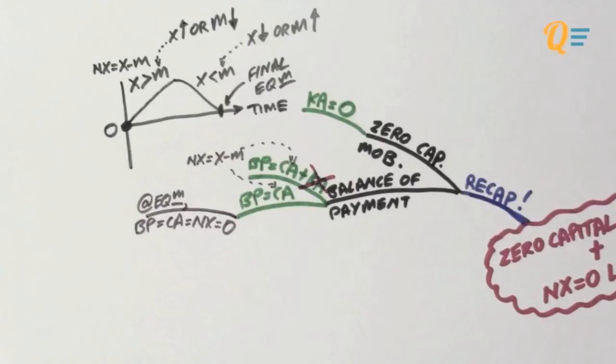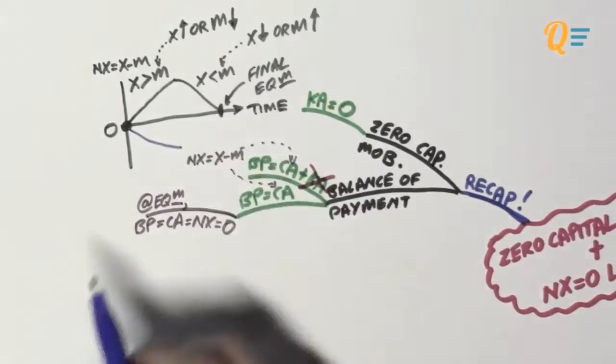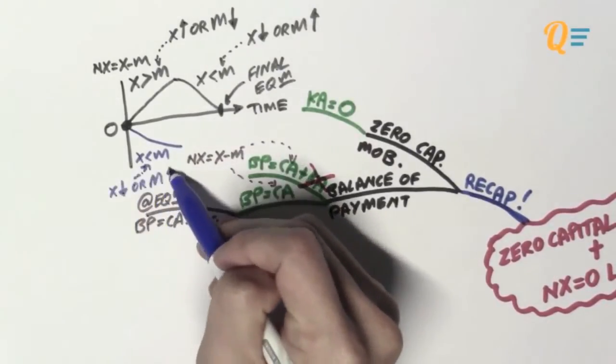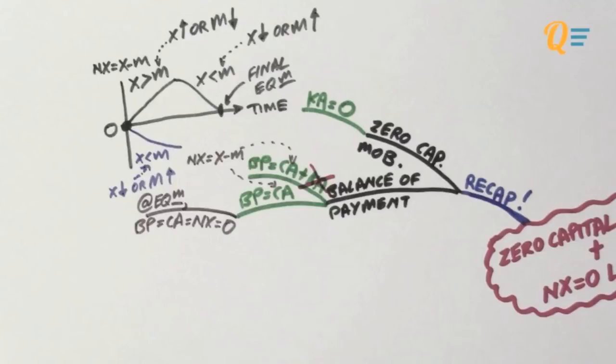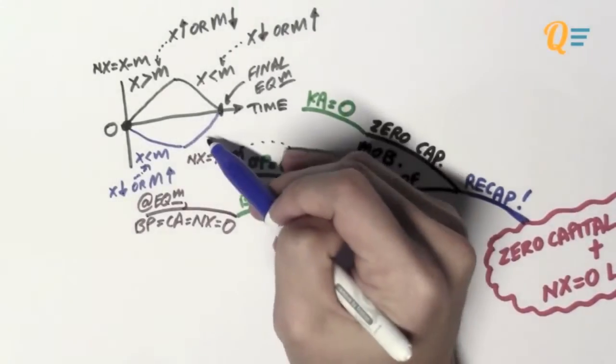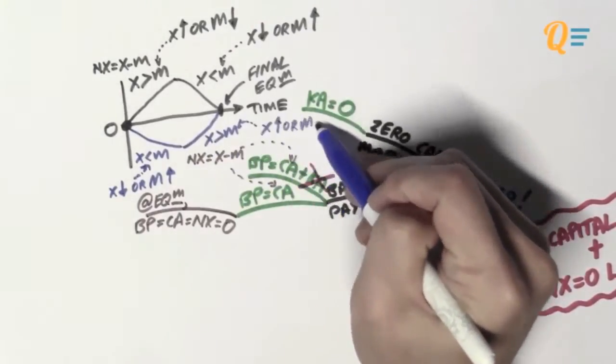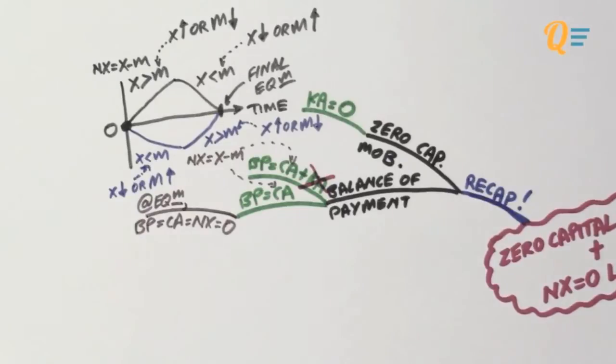At the same time, my net exports can also be in the negative region. So when we start from zero, we go into the negative region when our exports is less than our imports. And this is caused by either a decrease in exports or an increase in imports. So to get back to the final equilibrium of net exports equals to zero, my exports would have to be more than my imports. So this can be caused by either an increase in exports or a decrease in imports.